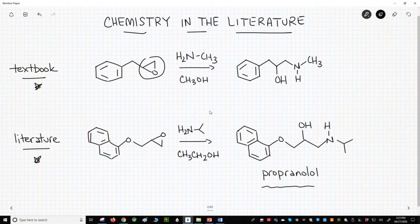Propranolol, a beta blocker that is used to treat abnormal heart rhythms as well as high blood pressure. Organic chemistry makes molecules with valuable properties, and that idea is more apparent in the bottom reaction than the top.